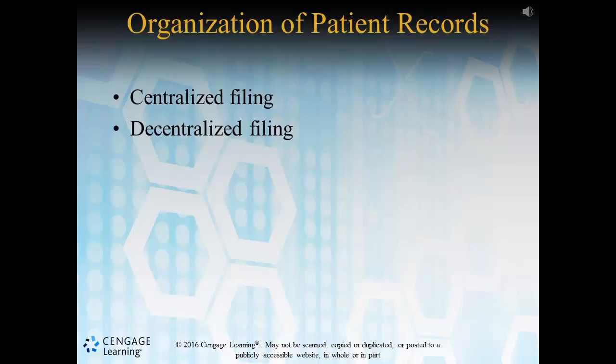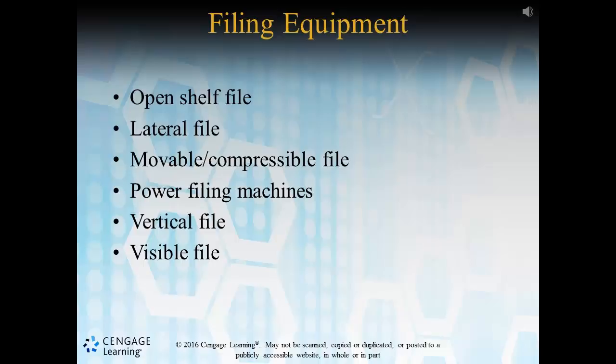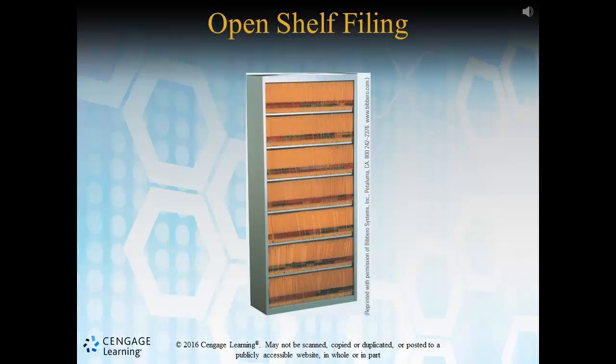Paper-based filing systems require a variety of equipment to adequately store records. A variety of considerations must be taken into account when selecting this equipment. This slide lists several different types of filing equipment that we'll dive into individually. As this first graphic shows, the open shelf file is a six-to-eight-shelf unit that likely looks strikingly similar to a bookshelf that you or I might have in our own home. This piece of equipment houses two times the amount of files that a normal cabinet does, but it only takes up about 10% of the same space.